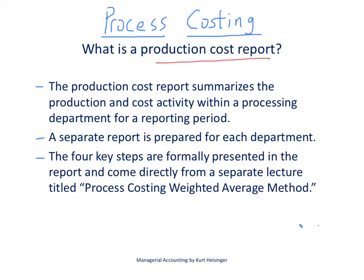Looking at the first bullet point here, the production cost report summarizes all the production cost activity within a processing or production department for a reporting period. In prior videos we talked about having an assembly production department and a finishing production department, so we would have this cost report for each of those departments.